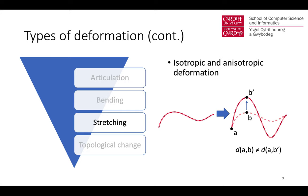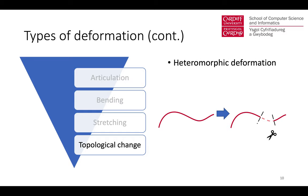The third type is stretching, where geodesic paths are no longer preserved — distances can become larger or smaller. This includes isotropic stretching, where the stretching is the same in different directions locally, and anisotropic stretching, where different directions may have different levels of stretching. The last type is topological changes, where geodesic paths may change through a shortcut or become broken when surfaces touch or the object breaks.